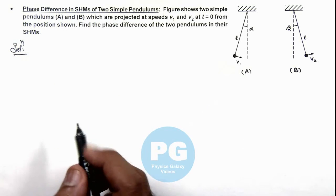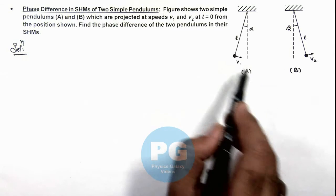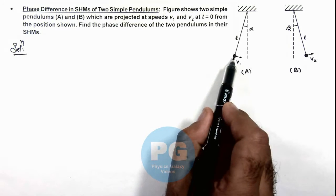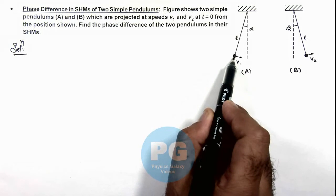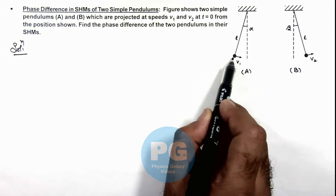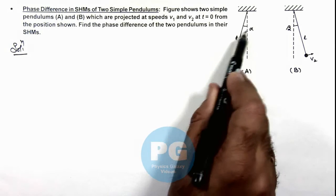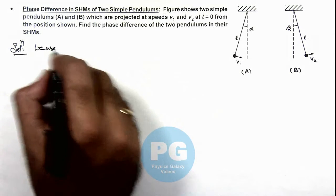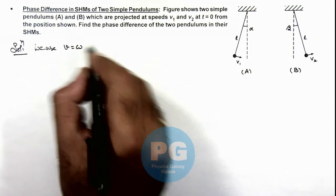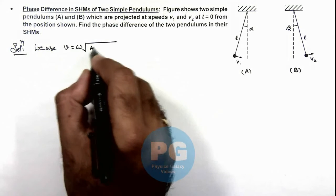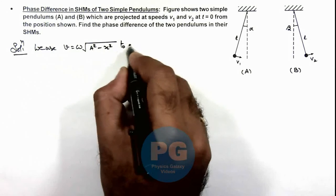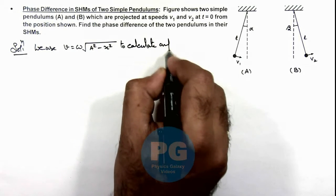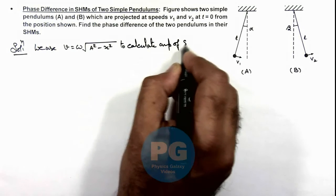So the very first thing we can do here is to calculate the amplitudes of these two motions. Here we can see this pendulum A in initial position is at a distance l·α from the initial position. So here we use the relation v = ω√(A² - x²) to calculate amplitude of SHMs.